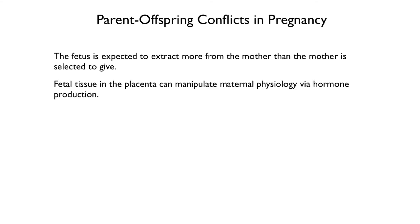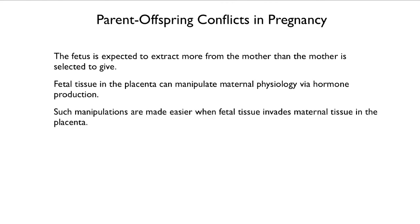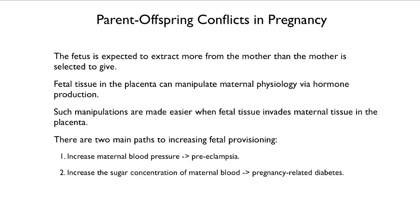Fetal tissue in the placenta can manipulate maternal physiology via hormone production, as we've seen in the evolution of the placenta. These manipulations are made easier when fetal tissue invades maternal tissue, which has happened in our lineage. The two main paths to increasing fetal provisioning are increased maternal blood pressure — which can lead to preeclampsia if excessive — and increased sugar concentration, which can lead to pregnancy-related diabetes.